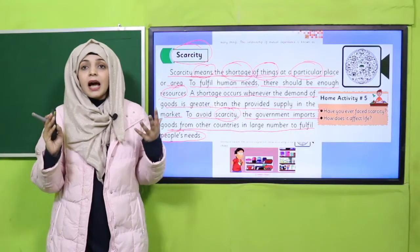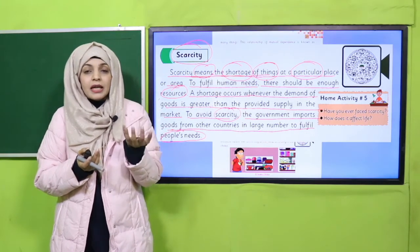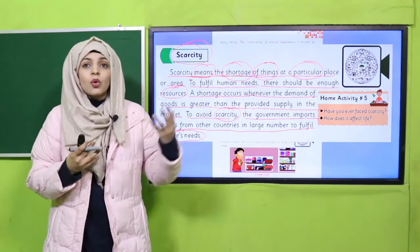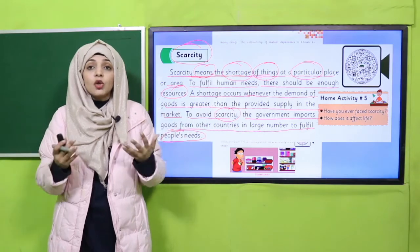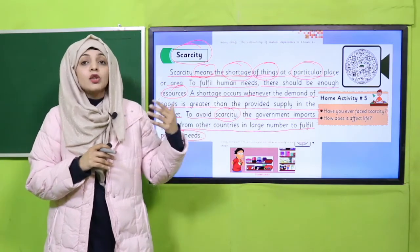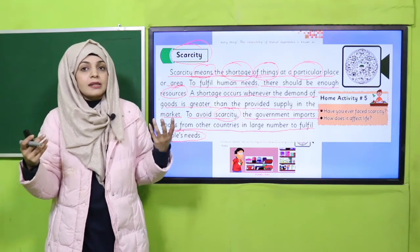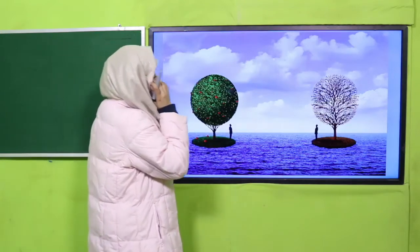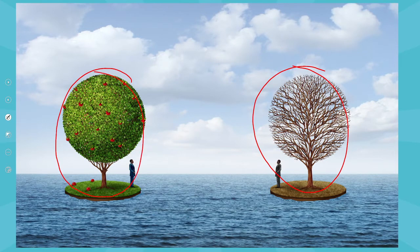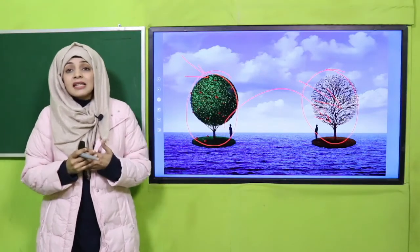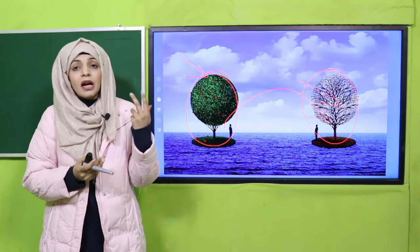Scarcity hum kehte hain jab bhi kisi cheez ki tadaad kam reh jaati hai ya uski shortage ho jaati hai. Iske liye duniya bhar mein agar kisi mulk mein kisi cheez ki tadaad kam ho jaaye — for example aapke mulk mein gandum kam reh gayi hai — toh hum ho sakta hai ke apne kisi neighboring country se import karlein. Agar aapke paas kisi cheez ki zyaada hai aur doosre jagah ki zaroorat hai, toh us jagah se cheez ka transfer hoga. Scarcity tab hoti hai jab kisi bhi cheez ki tadaad kam ho jaaye.